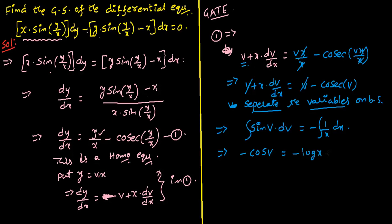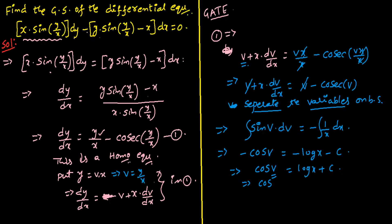The negative signs cancel, giving cos(v) equals log x plus c. Replacing v with y/x, the general solution is: cos(y/x) equals log x plus c.